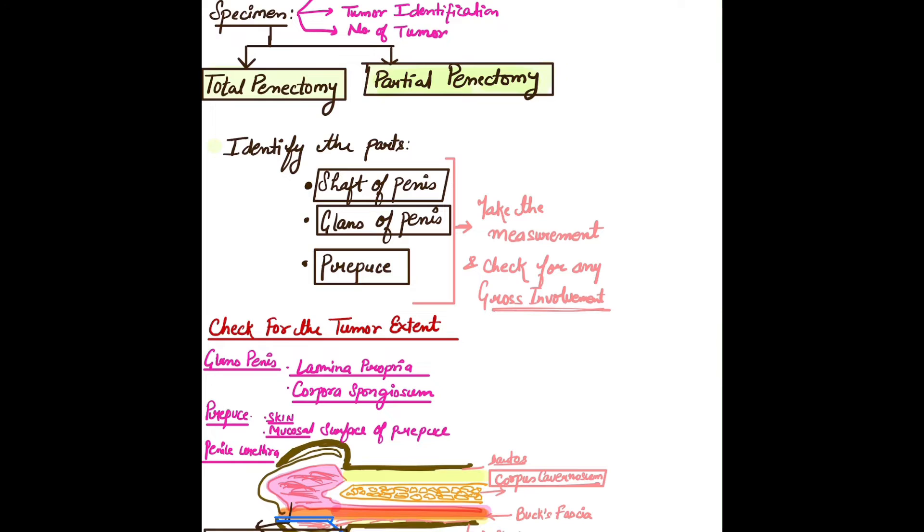This helps us check the tumor extent—whether the tumor extends to the glans or involves the prepuce or penile urethra. To identify and orient the penile urethral meatus, we'll try to put a probe inside it.